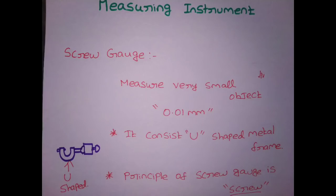Let's fix the screw gauge. If you want to fix an object, we can fix the other one. If you want to fix the key, you can use U — there is a U-shaped metal frame. The principle of screw gauge is the principle of the screw. If you want to see the option, it is easy.